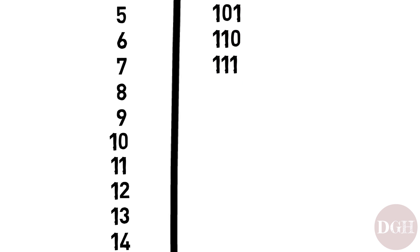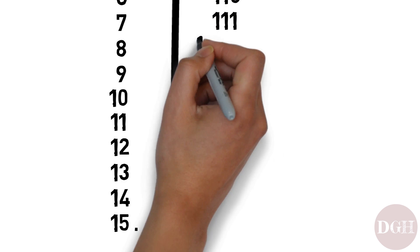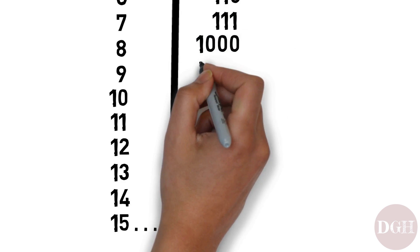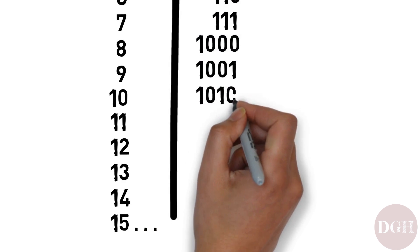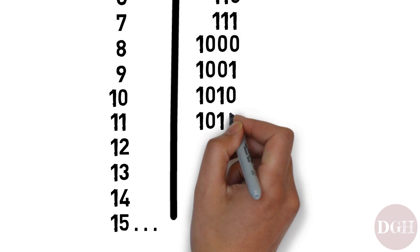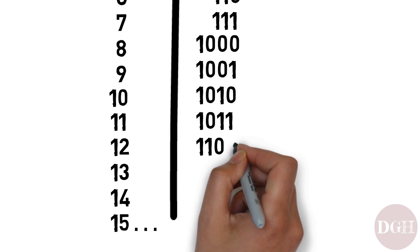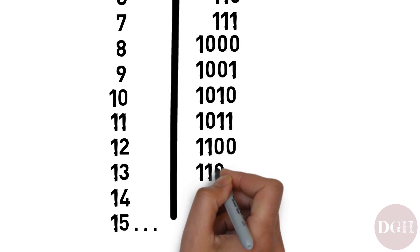Now we've run out of options again, so we have to add another digit. We get 1-0-0-0, then 1-0-0-1, 1-0-1-0, 1-0-1-1, 1-1-0-0, 1-1-0-1, 1-1-1-0, and 1-1-1-1.